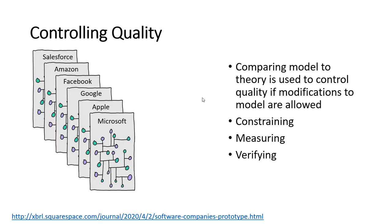You can control the model and prove that each representation of information is correct. You can measure it, you can verify it. That's what this is trying to show — you're controlling the quality of information.